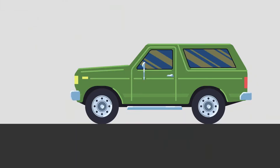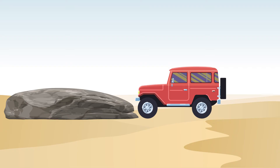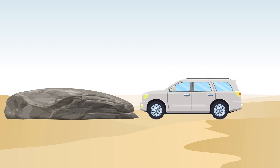The vehicle's approach angle is defined as the angle between the ground level and a line drawn from the lowest part of the front of the vehicle, usually the front bumper, to where the front tire touches the ground. A short-nosed vehicle with large tires can roll up onto a steep obstacle thanks to its steep approach angle. In contrast, a car with a low bumper and long nose has a shallow approach angle and will hit the rock before the tires can connect, making it difficult if not impossible to climb without causing damage.